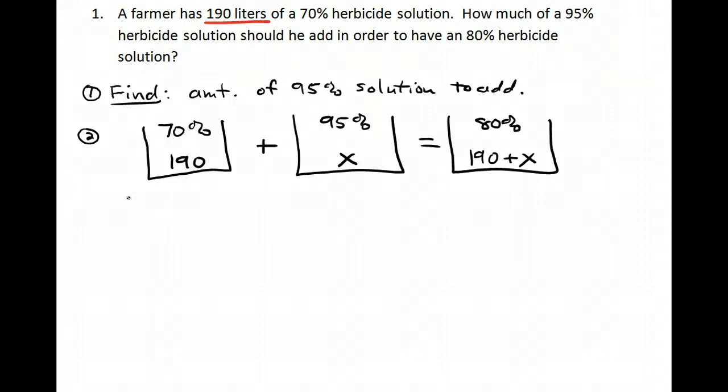Now I need my equation. I'm going to multiply my buckets, but when I do that I need to make sure that I turn my percents into decimals: 0.70 times 190 plus 0.95 times x equals 0.80 times 190 plus x. I'm going to solve this equation and we'll see where we go from there.